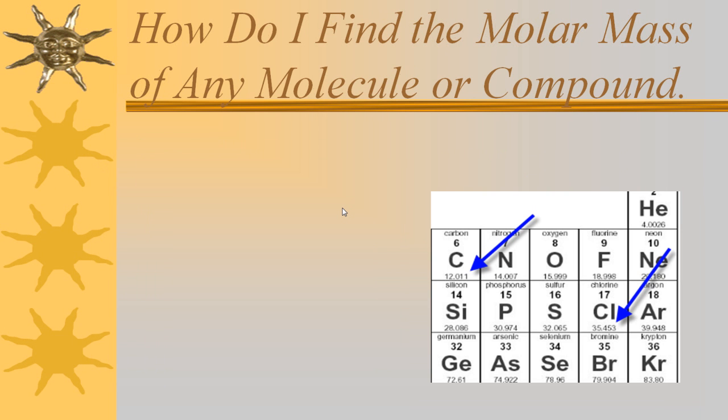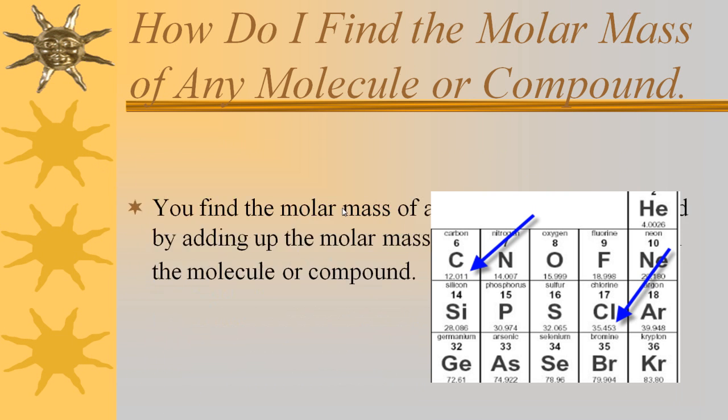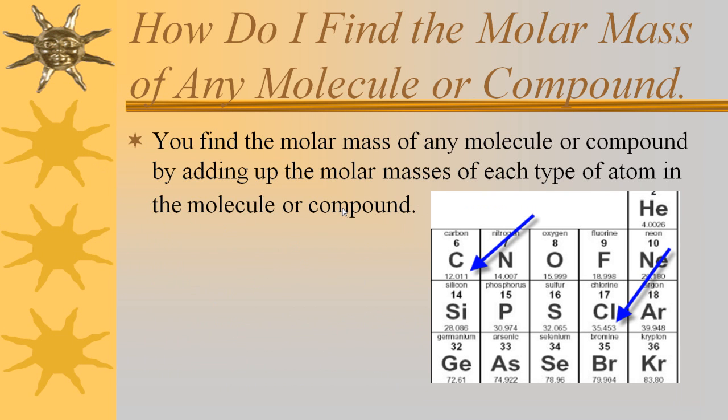All right. So that was pretty easy to do. It's really very simple to find the molar mass of an element. But what about a compound? You find the molar mass of a compound by adding up all the molar masses of each atom in the compound. So in that case, you need to know the chemical formula for the compound.